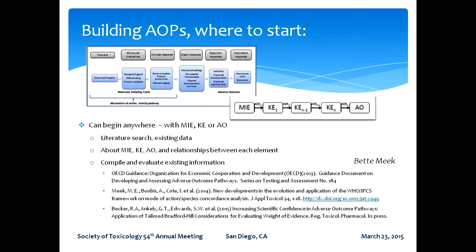Just a brief overview of how one begins to build an adverse outcome pathway. You can start anywhere along the pathway, depending on where you have the most information or where your area of interest is. It begins with a literature search and investigating all databases to gather all known data about the molecular initiating event, about any of the key events and the adverse outcome, and the relationships between those things. Then you compile and evaluate this information. There's guidance developed to help you through this process — the OECD has developed guidance for building and evaluating adverse outcome pathways, and there's also guidance from the WHO IPCS mode of action framework, as well as recent publications from 2014 workshops.